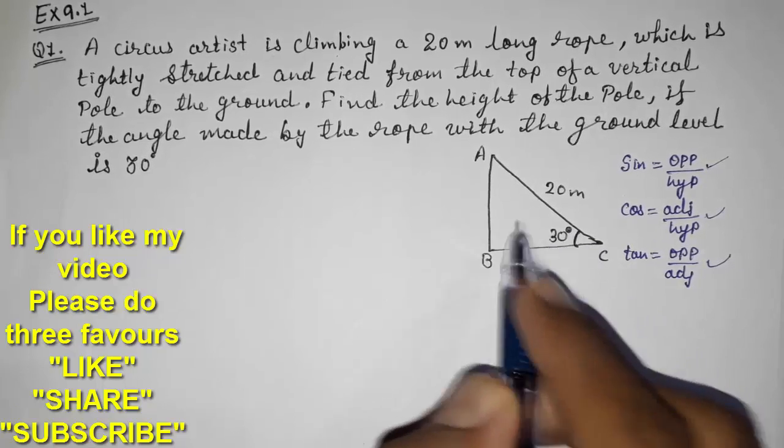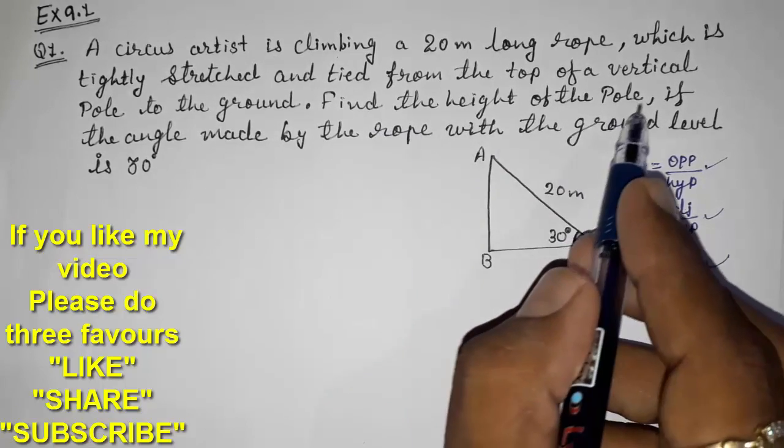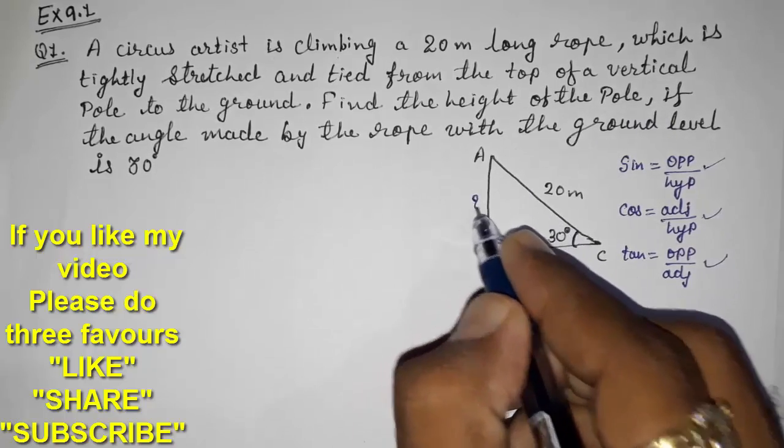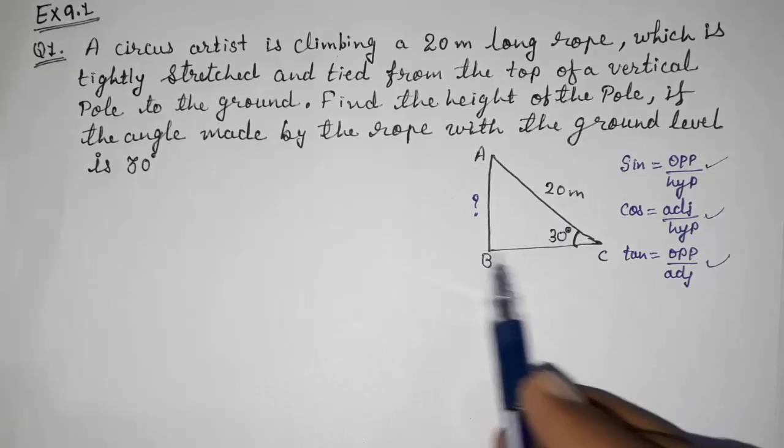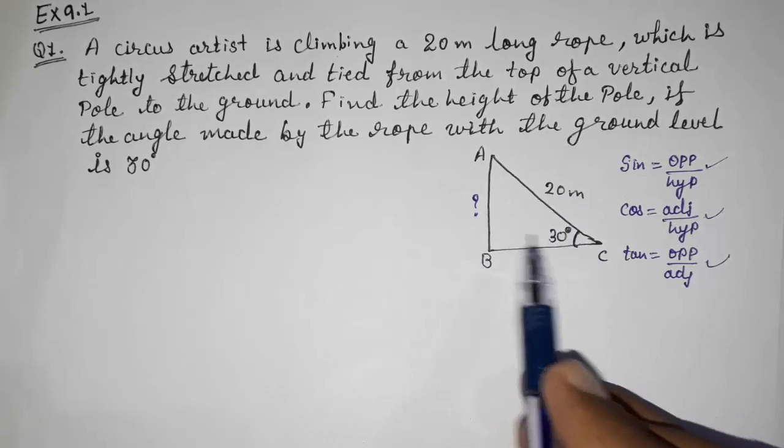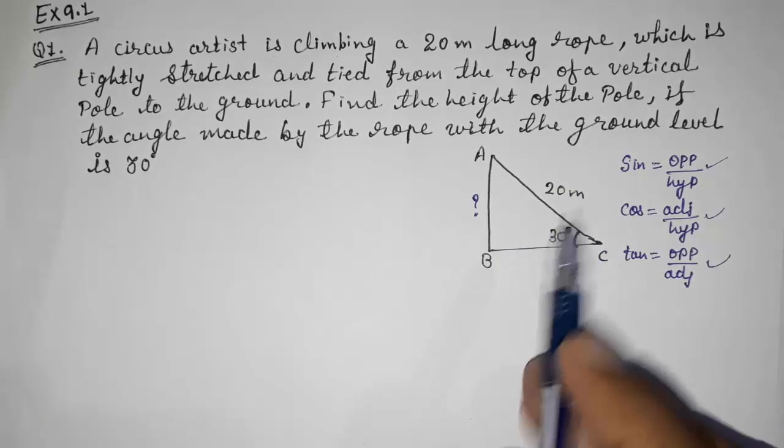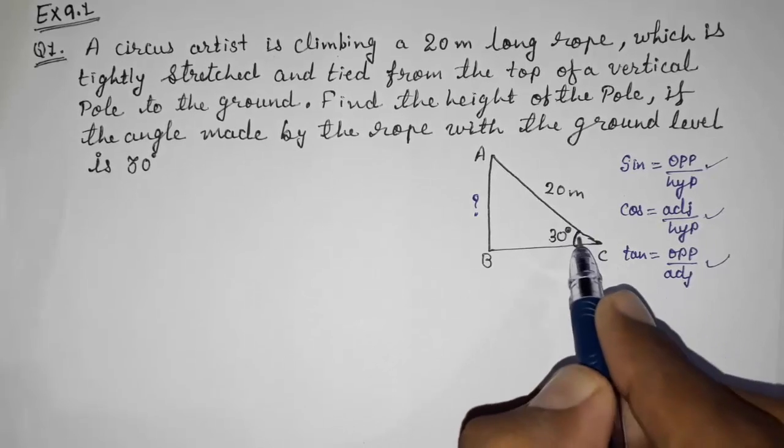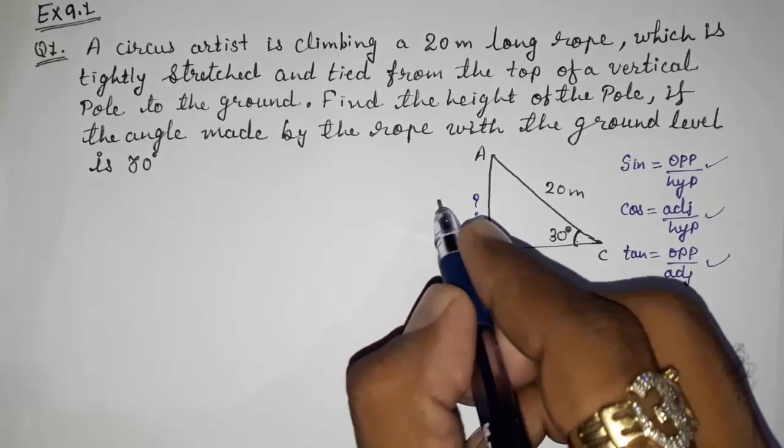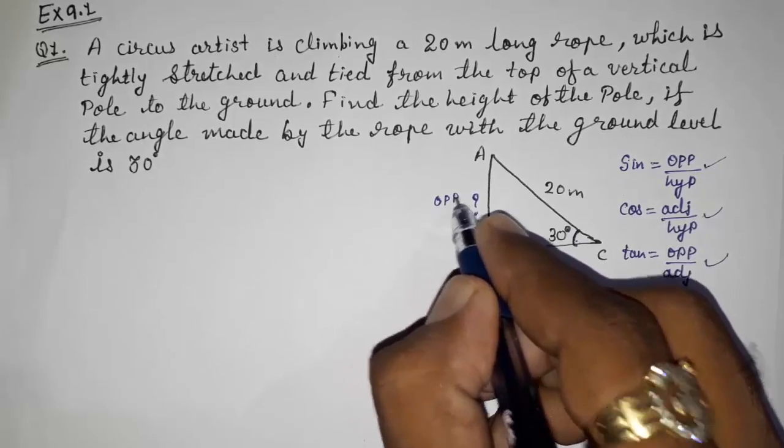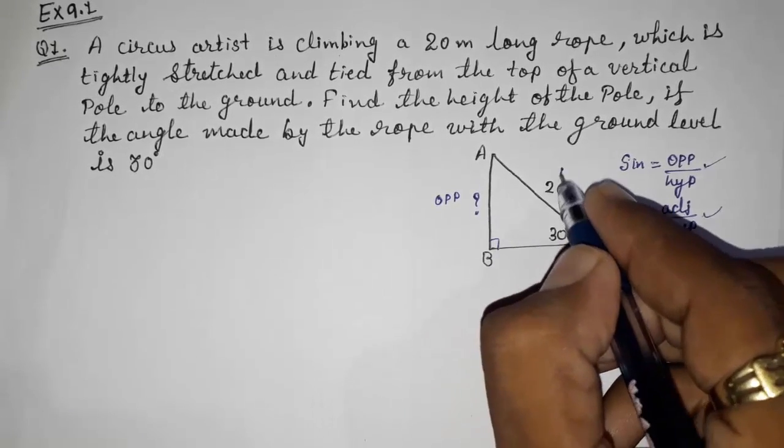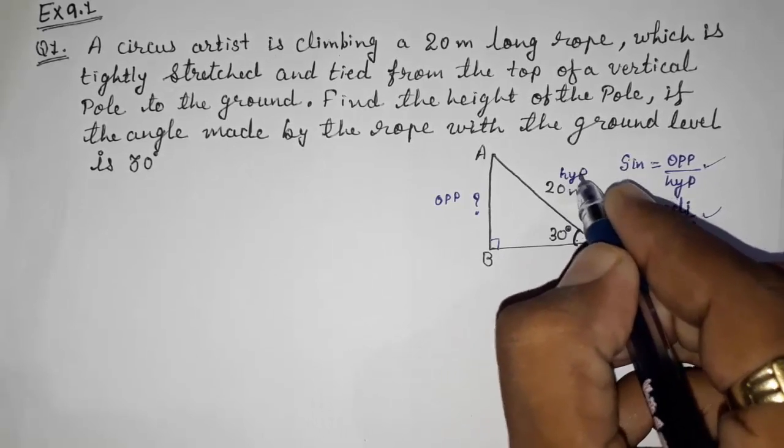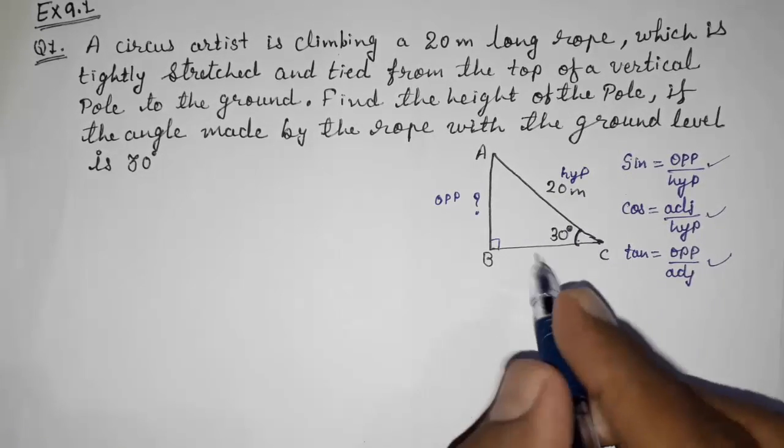They told us to find out the height of the pole, means we have to find out this height. Now we should know that all the three sides are there, and we should know the names of all the three sides. Because this is our angle, so opposite to this, AB is there, so AB will be our opposite side. This opposite to 90 degrees will be our hypotenuse, and this base is our adjacent.